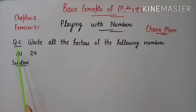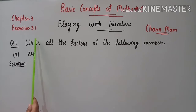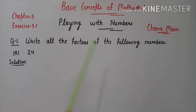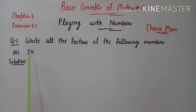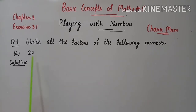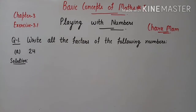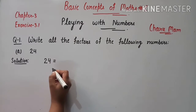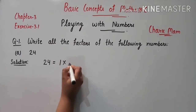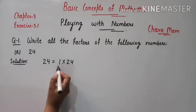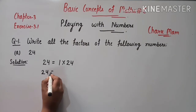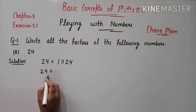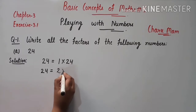Now we will start the questions of exercise 3.1. Question 1 statement is: write all the factors of the following numbers. Part a is 24. We need to find out the factors of 24. Every number has 1 as a factor, so 1 multiplied by 24 — 1 is a factor. Now we will check 2: 24 is divisible by 2, so 2 is also a factor.